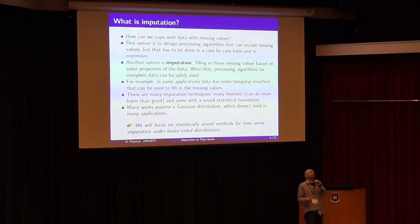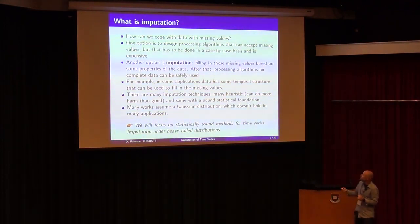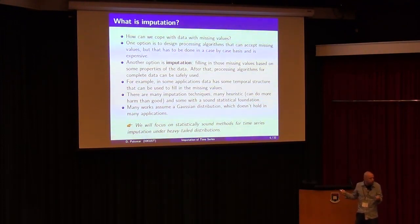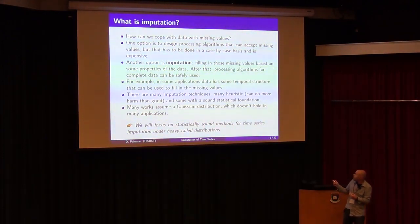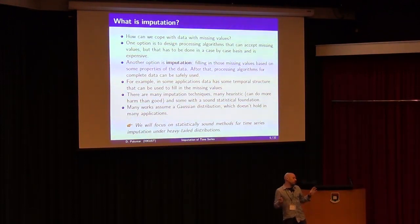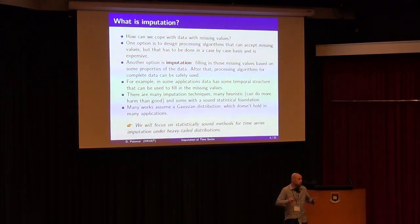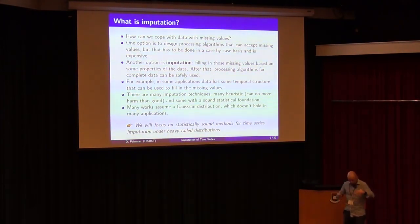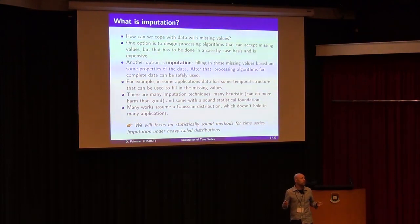Of course, you cannot do magic. How can you fill in the missing values? The idea is that we want to fill in those values based on some properties of the data. There has to be some structure — otherwise, you cannot do magic. In our case today, I am going to use the fact that time series usually have some structure along the time domain. That is the structure we will use to do the filling. There are many imputation schemes — this is a very old topic. Some imputation methods are totally heuristic and ad hoc, and some of them are totally wrong. We want to do it in a statistically sound way so that if you fill the missing values, you do not destroy the statistics of the original time series.